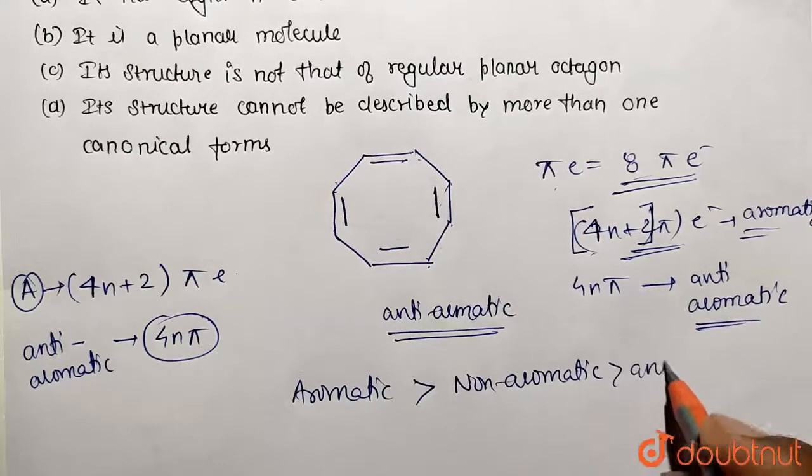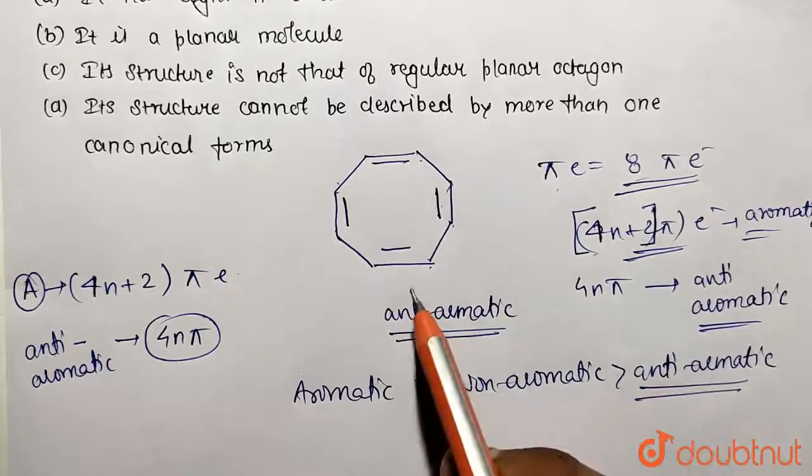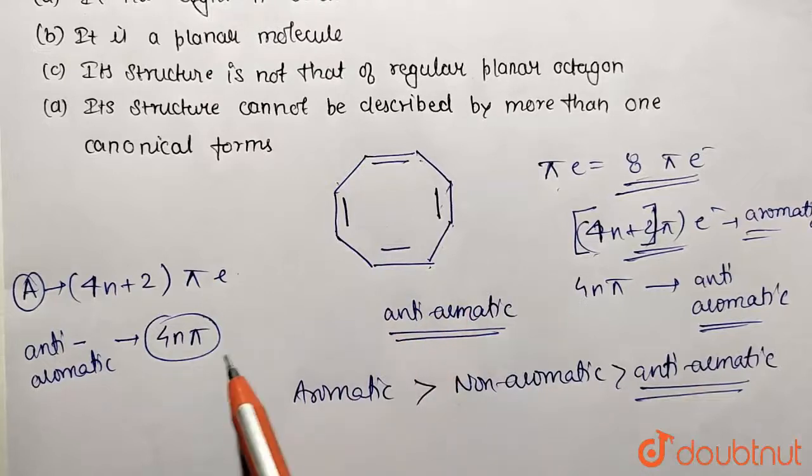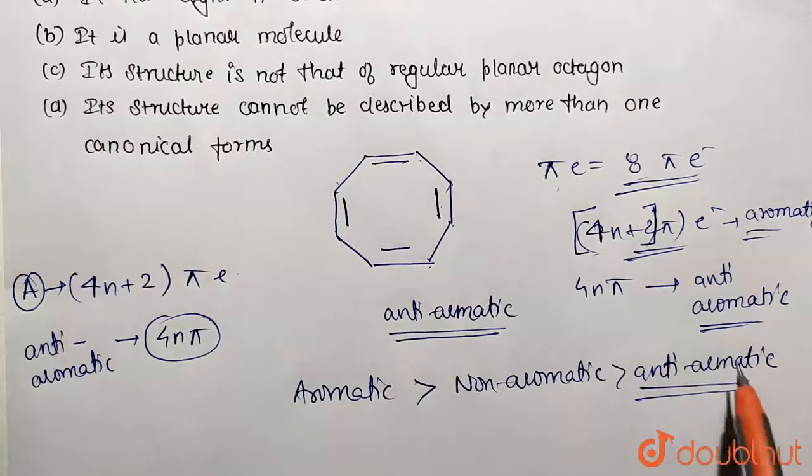So anti-aromatic, that means the most unstable one is anti-aromatic. Since this compound is following the 4n pi electron system, it is going to be anti-aromatic, so it is going to be very unstable.